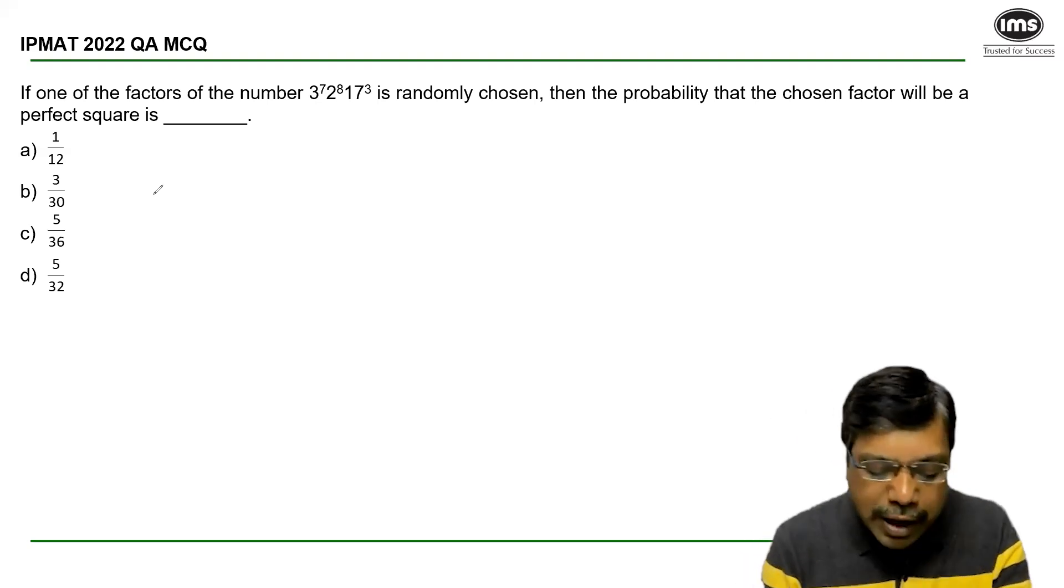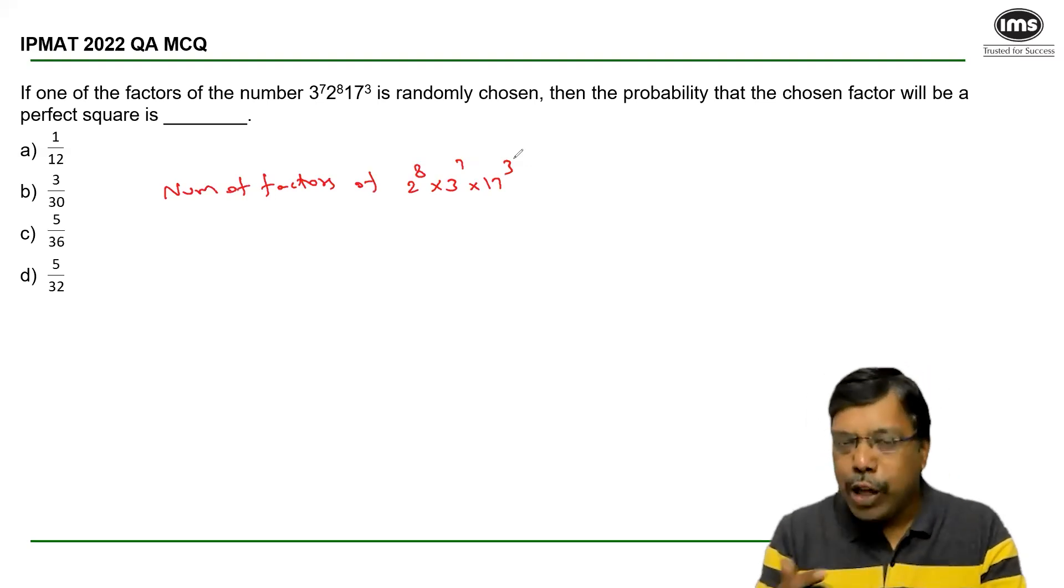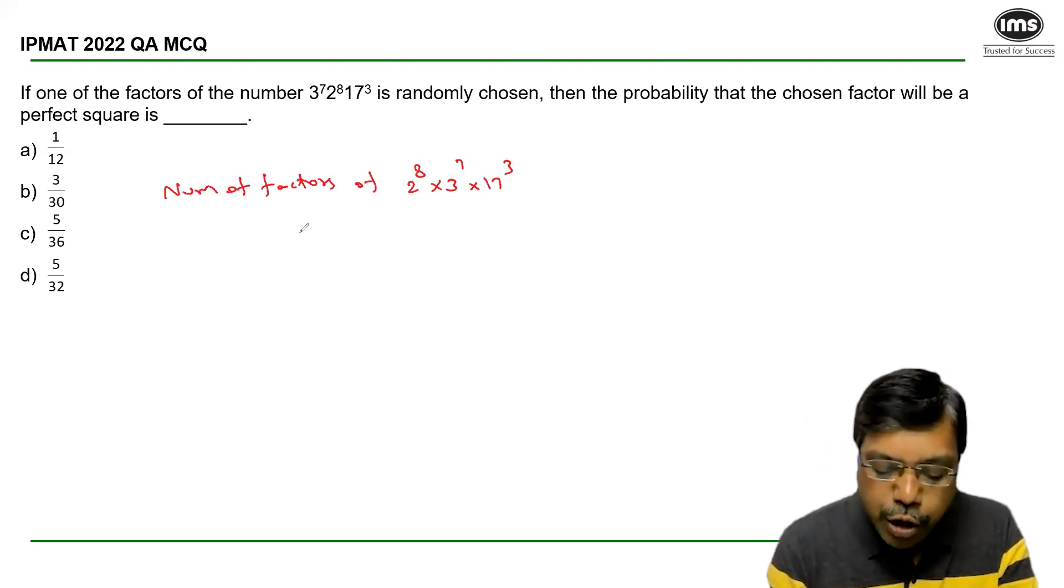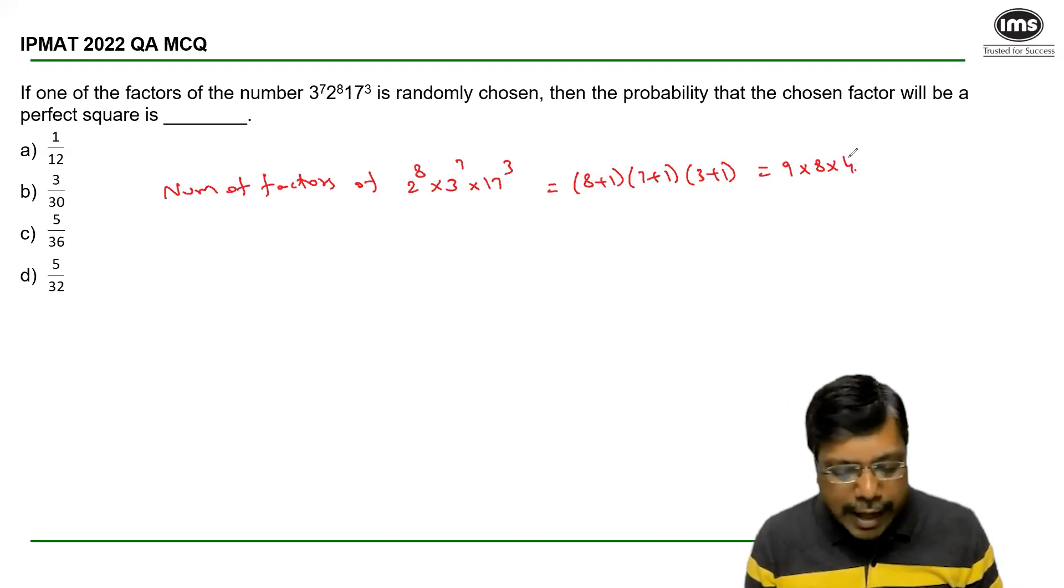First of all, let us look at the total number of factors of 2^8 × 3^7 × 17^3. By the concept of prime factorization, we know that the total number of factors will be (8+1) × (7+1) × (3+1), which is equal to 9 × 8 × 4. I don't want to multiply it. I'll keep it like that.